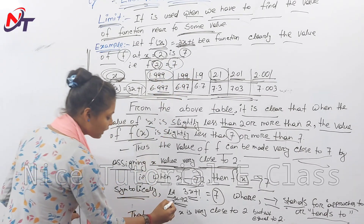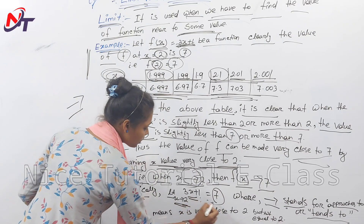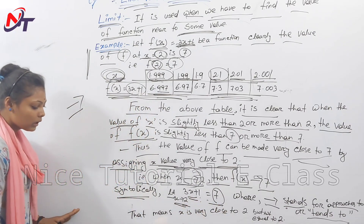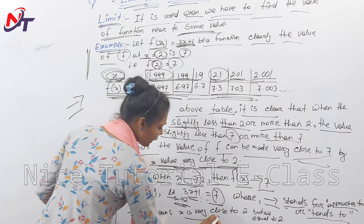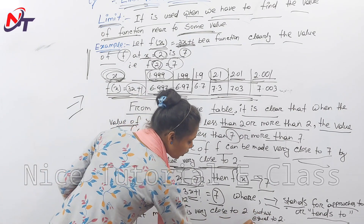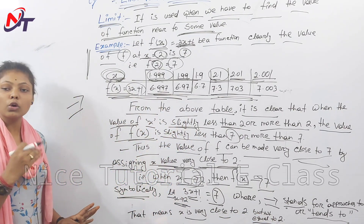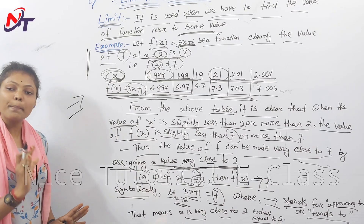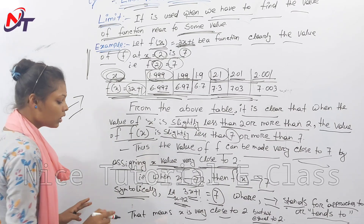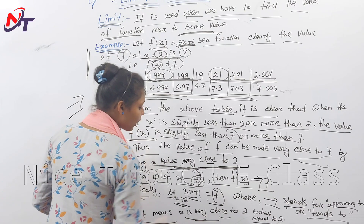We write symbolically: limit x tends to 2, (3x + 1) = 7. That means x is very close to 2 but not equal to 2. The arrow symbol 'tends to' means 'approaches' or 'close to', but x is not equal to 2.